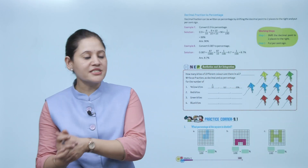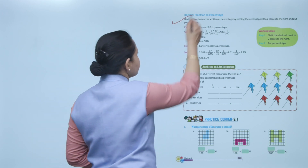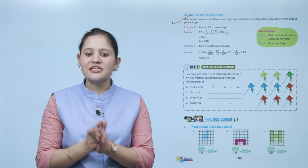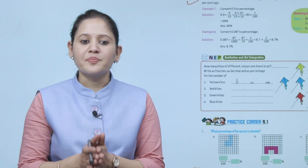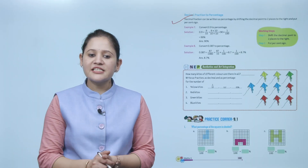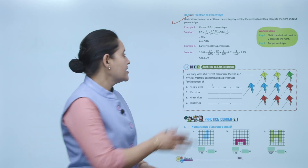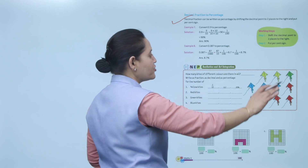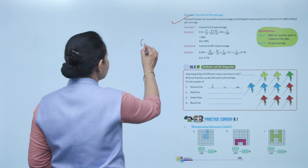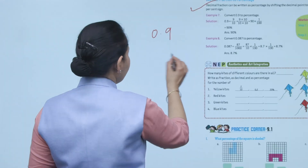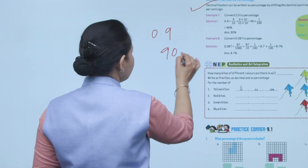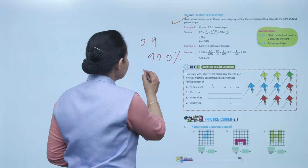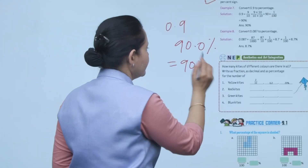Converting decimal fraction to percentage: a decimal fraction can be written as a percentage by shifting the decimal point two places to the right and putting the percentage sign. For example, convert 0.9 to percentage — shift the decimal point two places to the right: 0.9 becomes 90.0, so that is 90%.